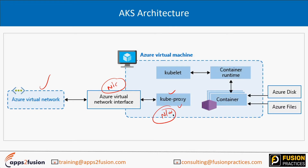Kube-proxy helps you with networking — all networking connections happen through kube-proxy. If you want to add storage to your AKS cluster, you can use Azure Disk or Azure File Shares. If you want to deploy anything to a container, you talk to it using an agent called the kubelet agent. You can go to the Azure portal and use the Azure dashboard or CLI to communicate with this kubelet agent.